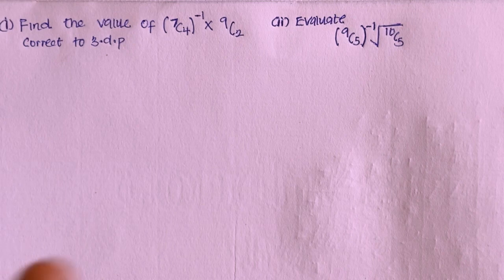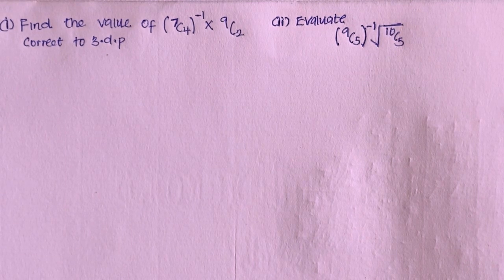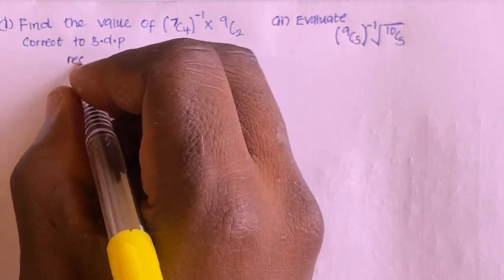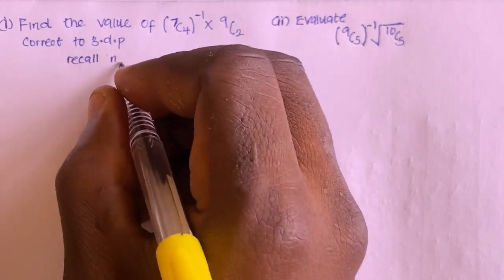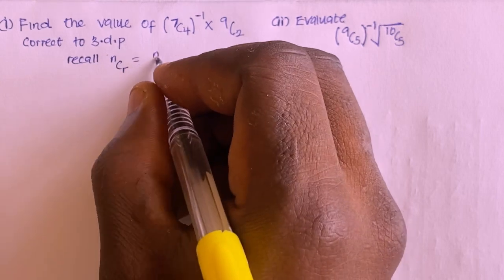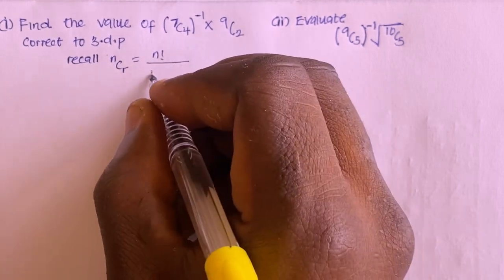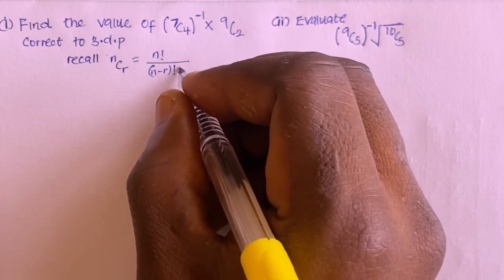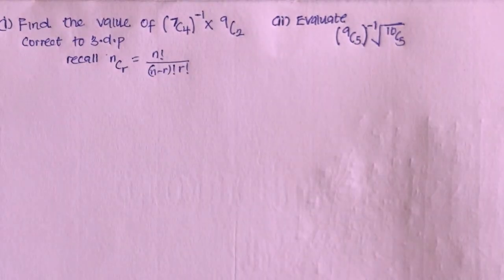I can use the combination formula. Recall that whenever we have n combination r, this is written as n factorial divided by (n minus r) factorial times r factorial.